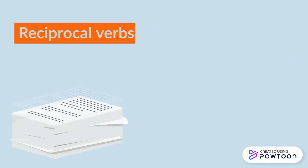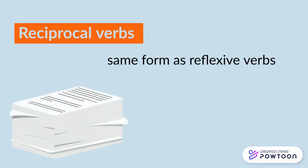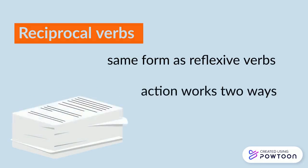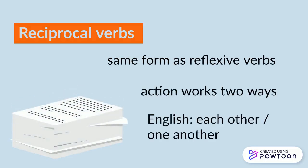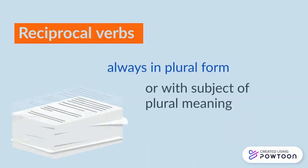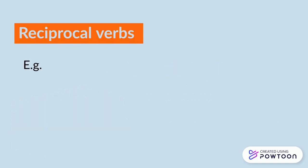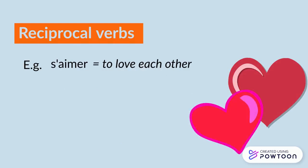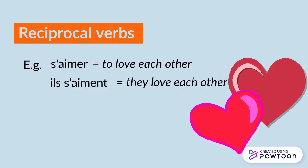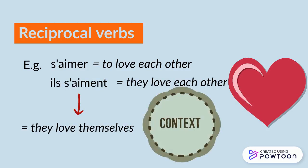You also have reciprocal verbs. They have the same form as the reflexive verbs, but they are used when the action works two ways. In English, you use 'each other' or 'one another.' They are always in the plural form, or with subjects with a plural meaning, such as the pronoun ON or a collective noun. For instance, s'aimer — to love each other. Ils s'aiment — they love each other. Note that this is ambiguous, because ils s'aiment could also mean 'they love themselves,' but context will normally clarify that.